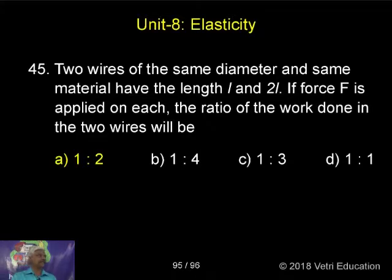Two wires of the same diameter and the same material. Why are we having same material? Because Y is also same. The length L and 2L. The force F is applied on each, the ratio of the work done in the two wires will be.